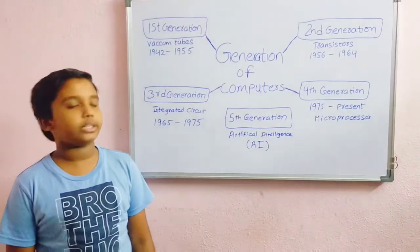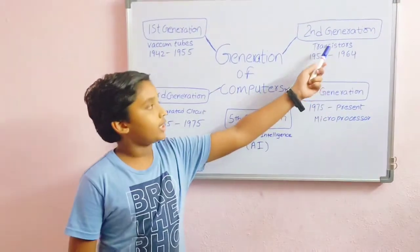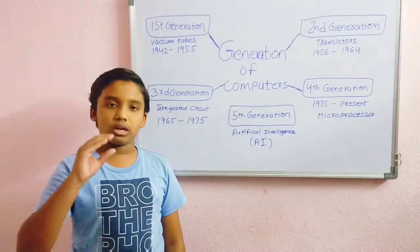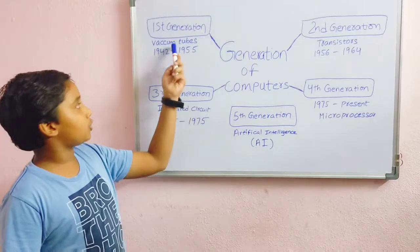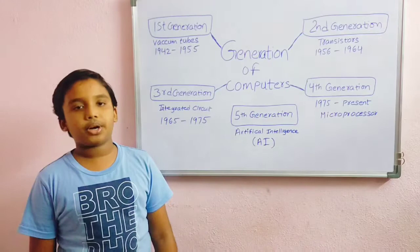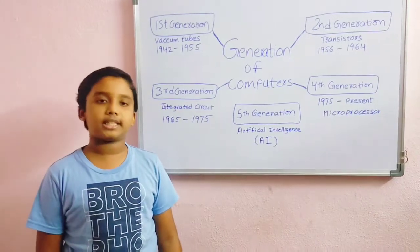The second generation computers used transistors instead of vacuum tubes because the transistors were smaller than the vacuum tubes. They were also faster, cheaper, and used less electricity.